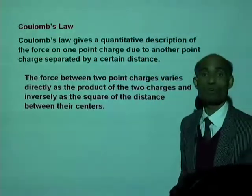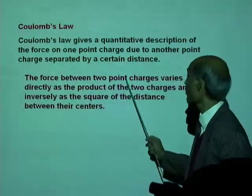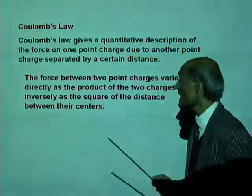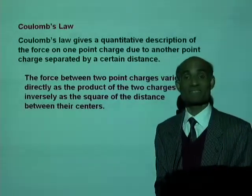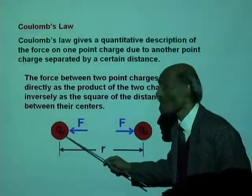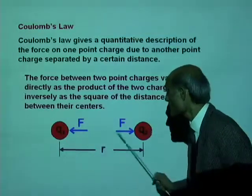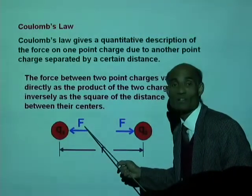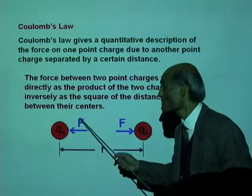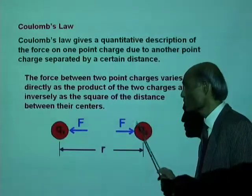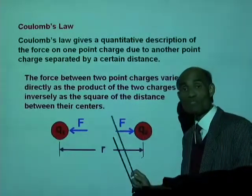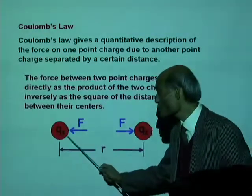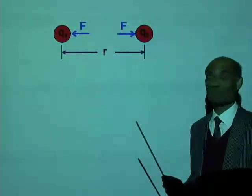What does Coulomb's Law say? Coulomb's Law gives us a quantitative description of the force on one point charge due to another point charge. Coulomb's Law only deals with interaction between point charges, not extended charges. The law says the force between two point charges varies directly as the product of the two charges and inversely as the square of the distance between their centers.